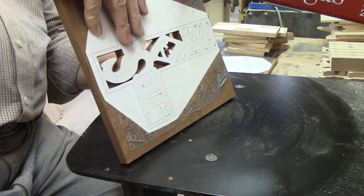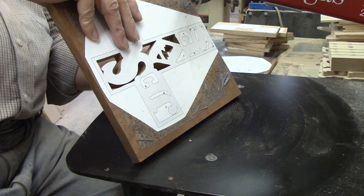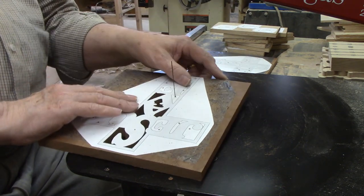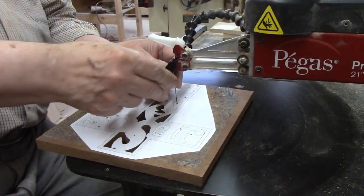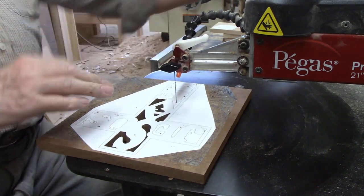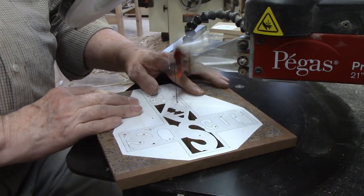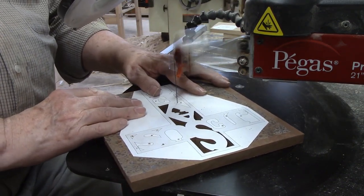You can see how long it takes to change a blade on the Pegas scroll saw. The blade change solved the problem and cutting moved back to being smooth and vibration free. That's another skill that develops over time. The ability to sense when your machine is behaving abnormally.